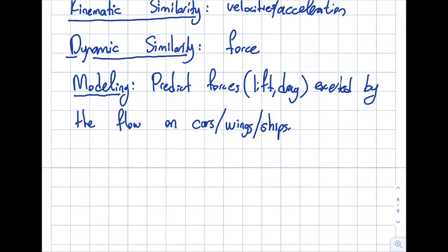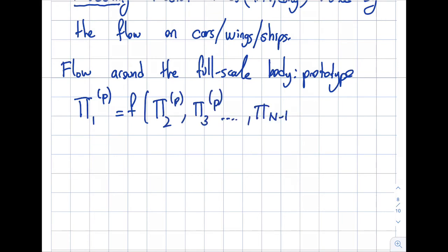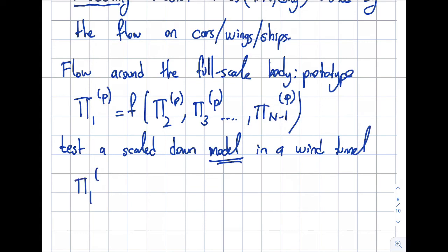Let's say that the flow around the full scale body, and I'm going to call this a prototype. So here's the process that I have to establish. First of all, I have to do what I talked about in the beginning of this particular chapter. So I said that you will do a relationship between the pies for the prototype. I'm writing p, p stands for the prototype. And let's go and say that we test a scaled down, as I mentioned it doesn't have to be scaled down but this is typically the application, model in a wind tunnel. Model, that's an important word. And now I will have another relationship for the model as well.